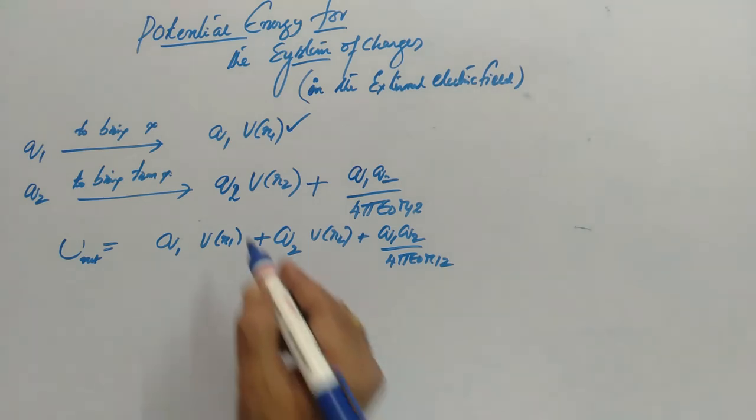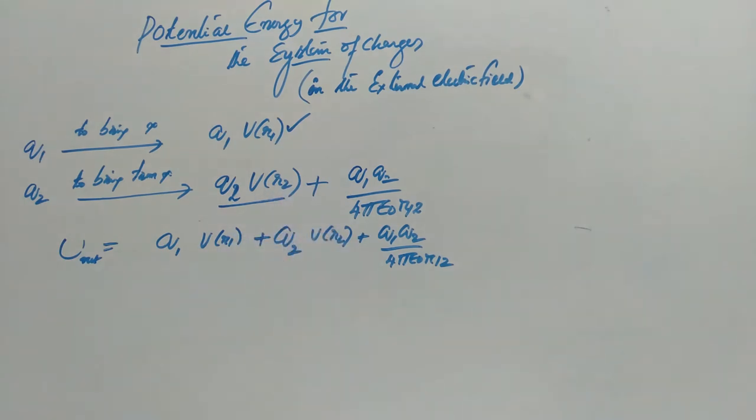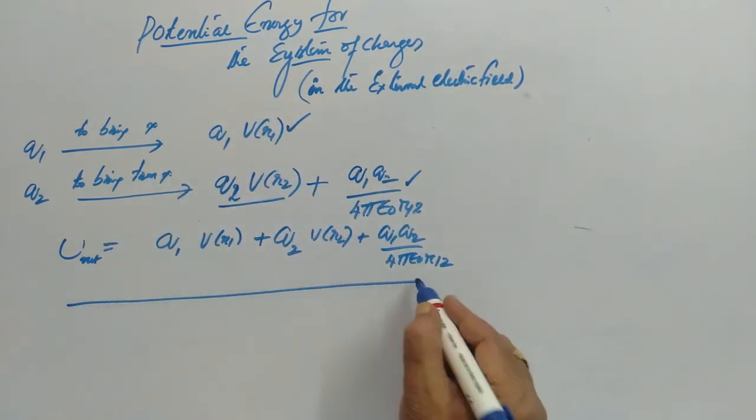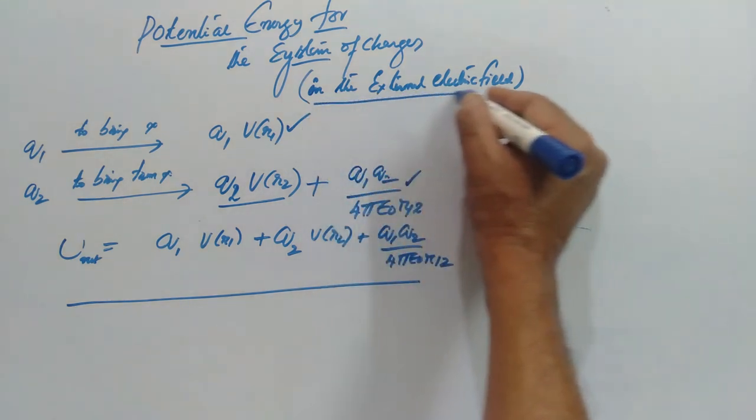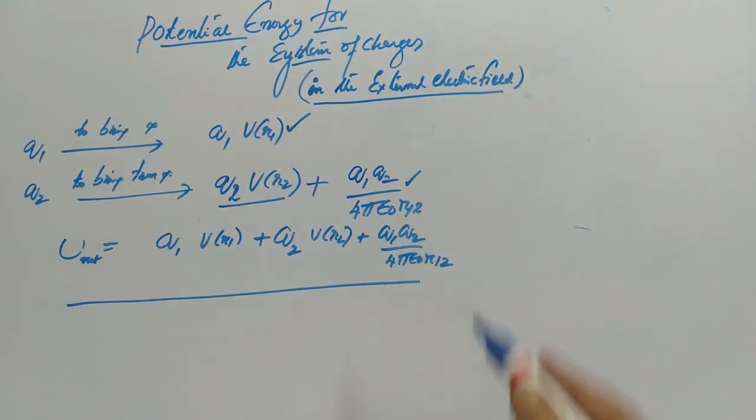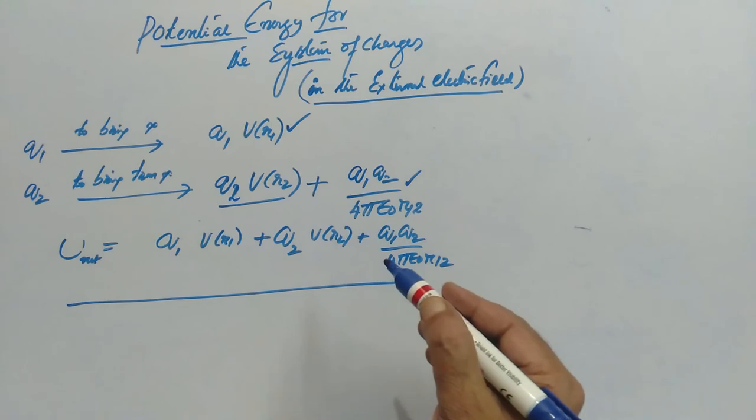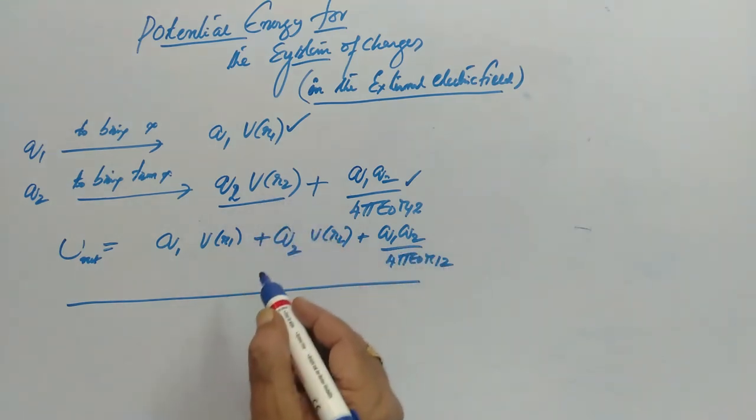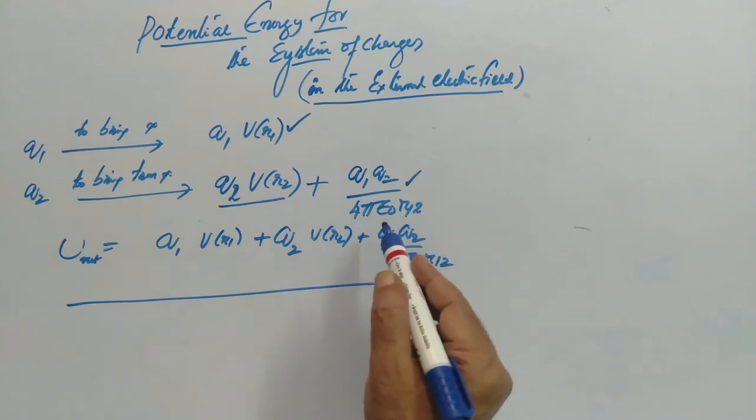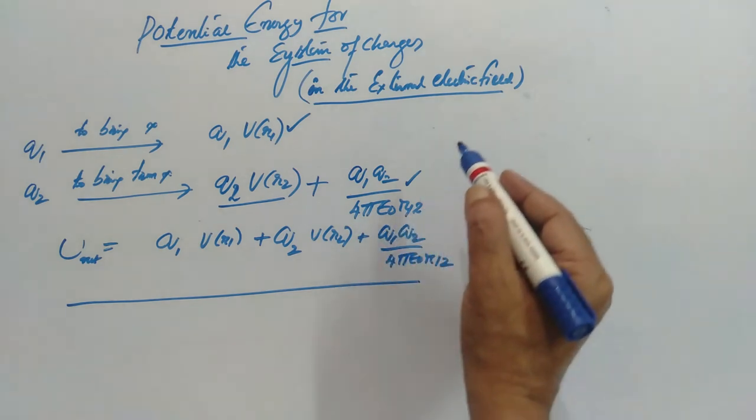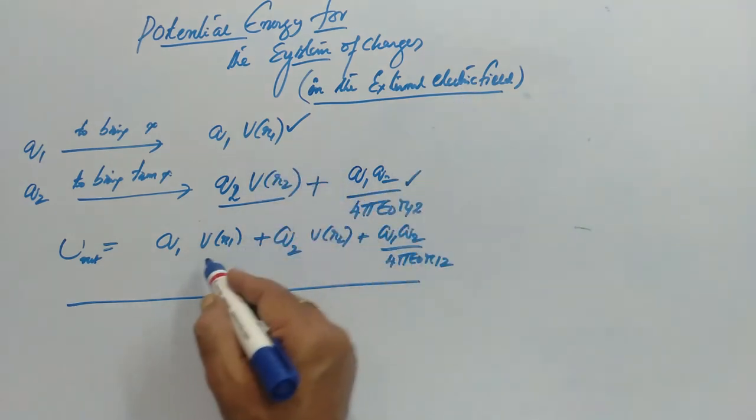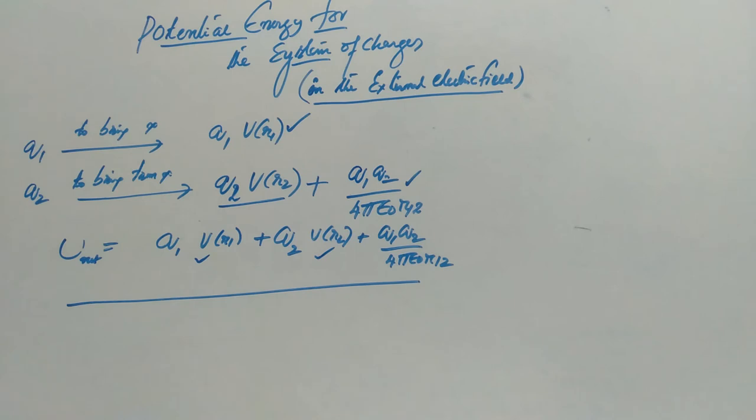If you want to bring only Q2, this would have been sufficient, but we are already keeping Q1 in that field. Therefore, we have to take this contribution also. That's why we have added this one, and the net means we have to add all three. So in the first derivation we did, we only had to take the pair of charges, which is nothing but in the absence of external field. There we wrote Q1 Q2 by 4π epsilon naught R12. And now here in the external field, you have to take these two terms also into account.